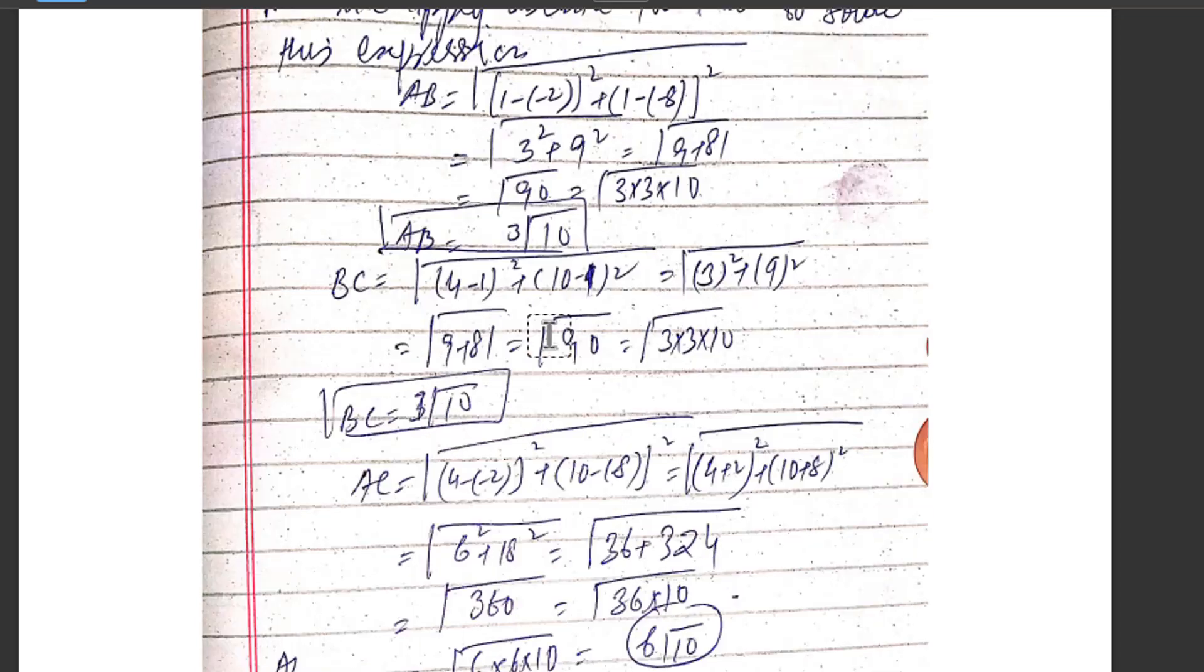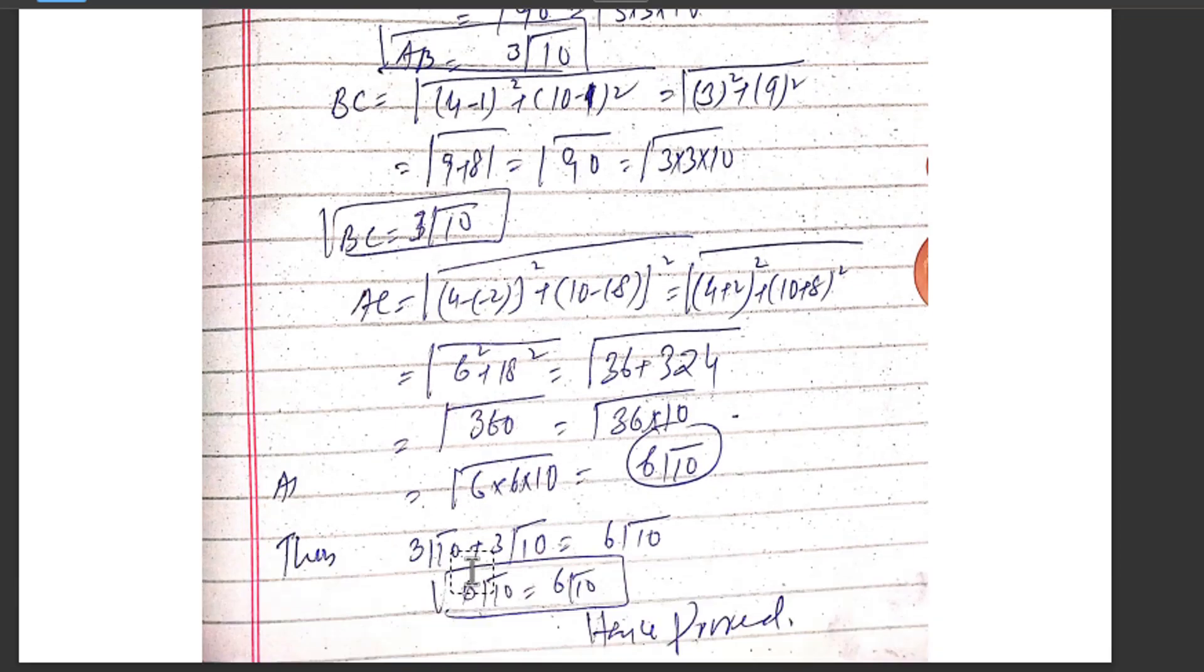Now put all these three expressions into the equation: 3√10 + 3√10 = 6√10. Hence proved.